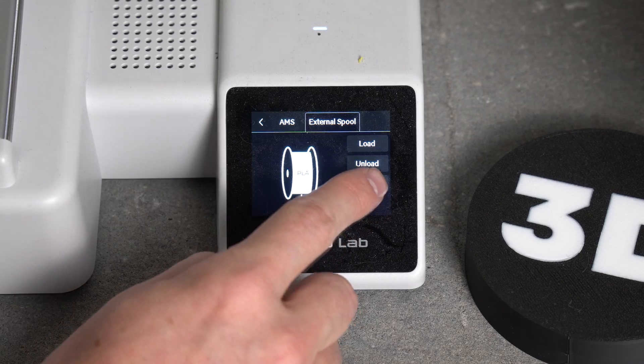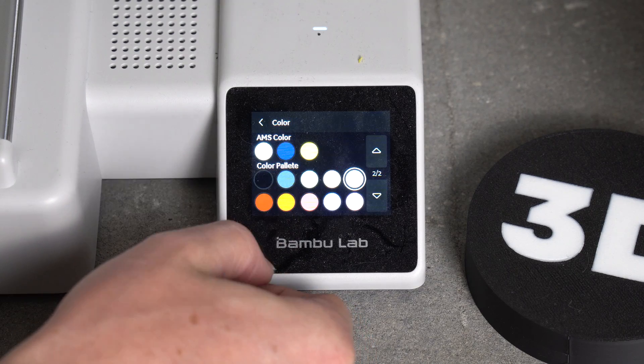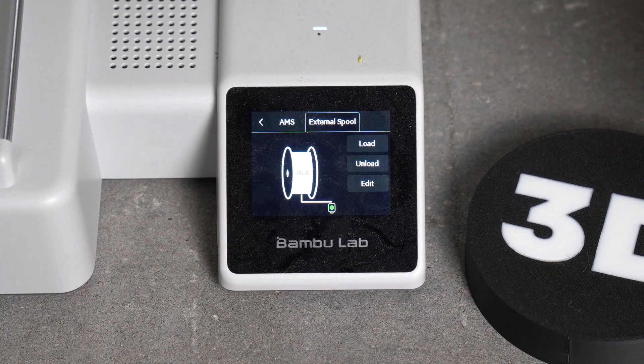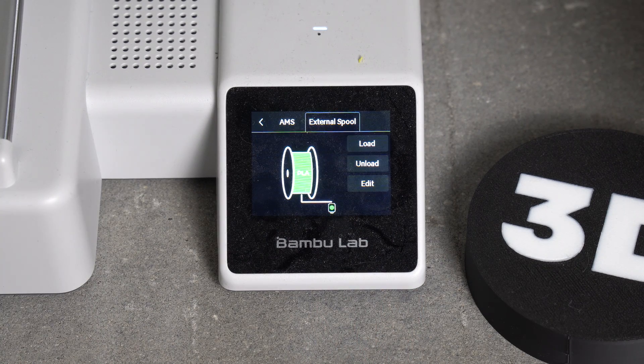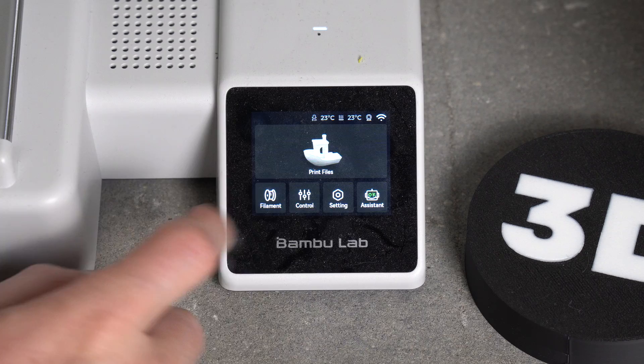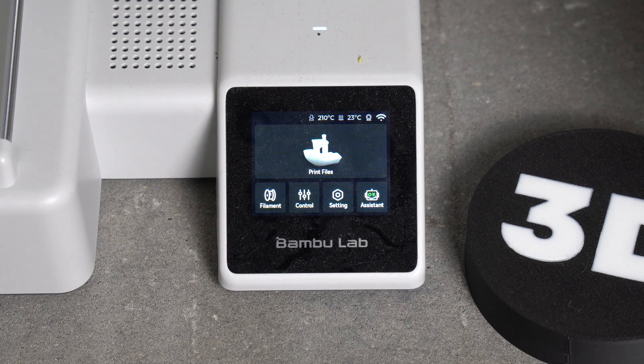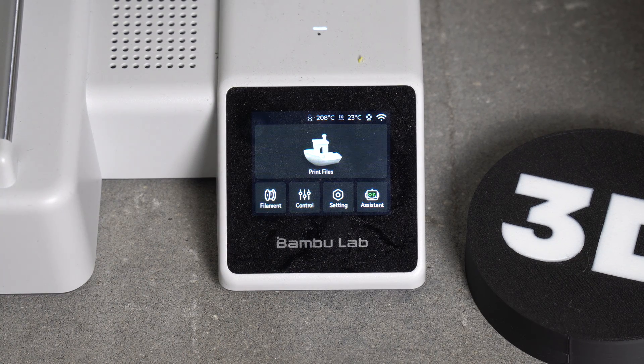And then we can edit our filament just so it matches the color we just loaded. That's all she wrote. Now you can start printing with the onboard filament and you're not using the AMS light anymore. Hope you liked that one and I'll see you in the next one.